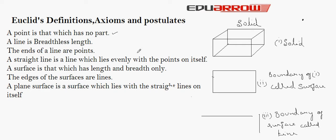Next, a line is a breadthless length. As you can see with line AB, it is a breadthless length — it has no thickness. There is no breadth of a line. So, a line is a breadthless length.